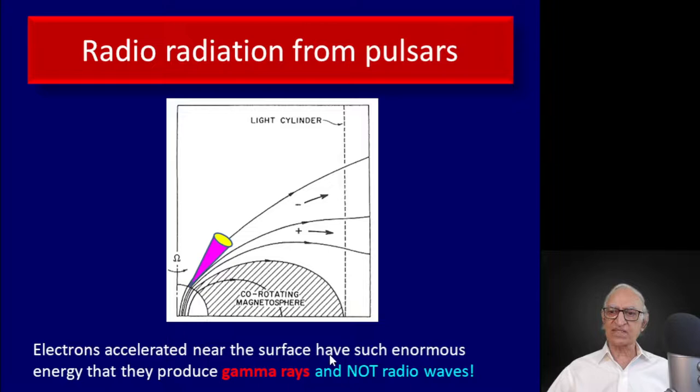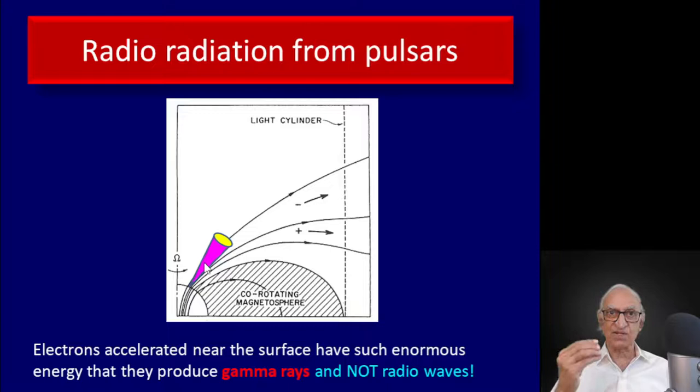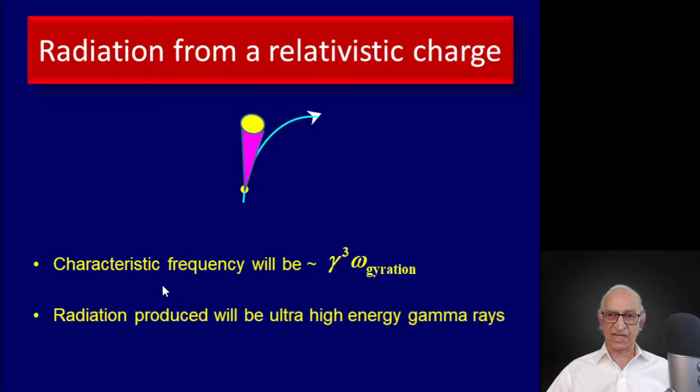Electrons accelerated near the surface have such enormous energy that they produce gamma rays and not radio waves, because the characteristic frequency is γ³ times the gyration frequency, and since γ is a million or a billion, γ³ gives gamma rays and not radio waves.